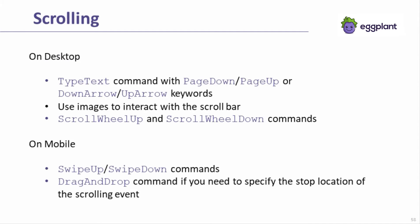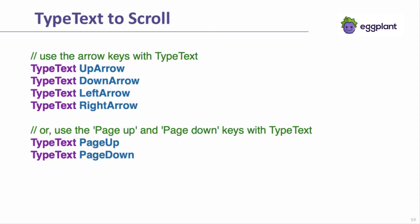Because Eggplant can only see what you can see on the screen of the SUT, some scrolling might be needed to reveal the element you wish to validate or interact with. On desktop SUTs, there are often multiple ways to scroll, from using the keyboard with type text commands, to interacting with the scroll bar using the mouse, or using the mouse scroll wheel. Eggplant is able to carry out any of these events on a desktop SUT, assuming the SUT supports these methods of scrolling. Here are some examples of using the type text command to perform keyboard-based scrolling actions, including the arrow keys or the page down key.